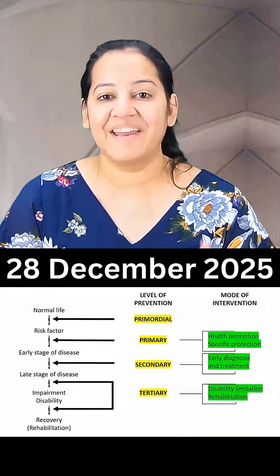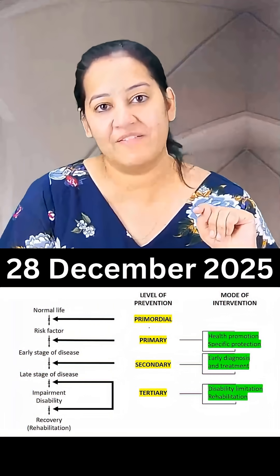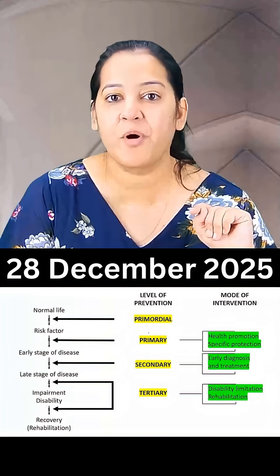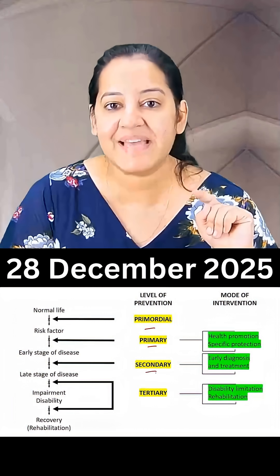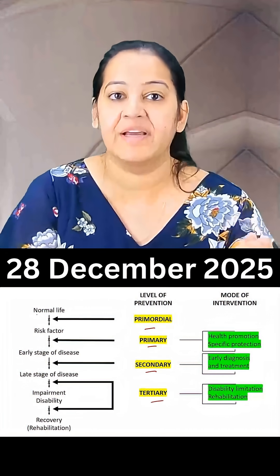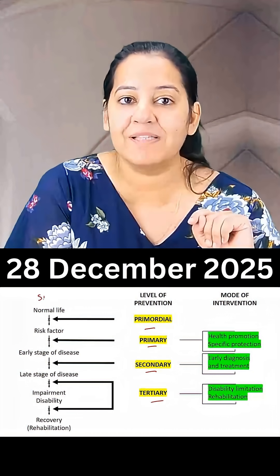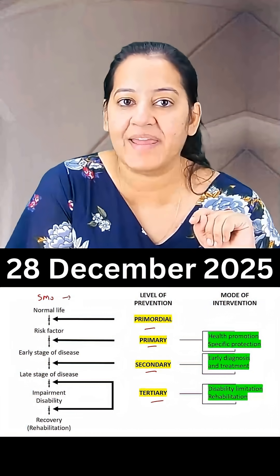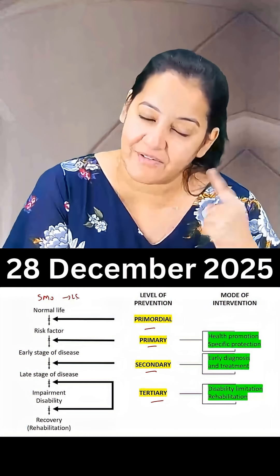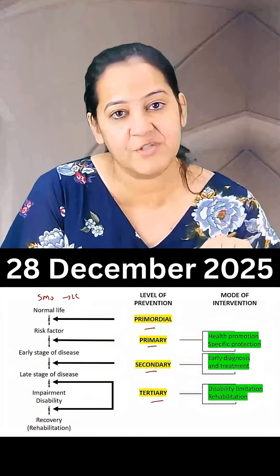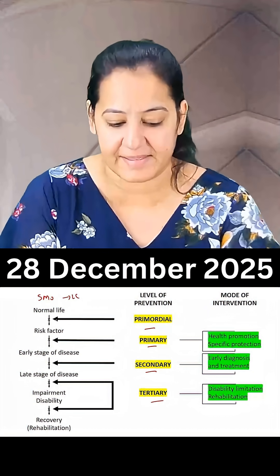Hello everyone. Here I am telling you about the four levels of prevention: primordial, primary, secondary, and tertiary. Let's take an example — smoking leads to lung cancer. Smoking is a risk factor which leads to a disease, that is lung cancer.